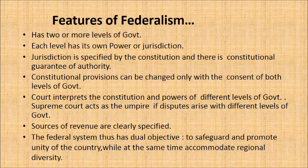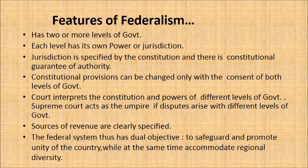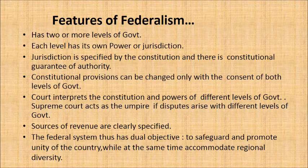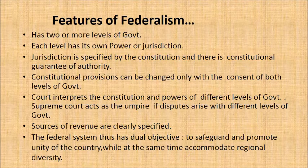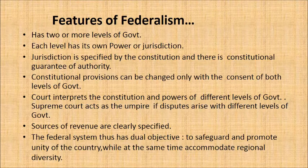The sources of revenue are clearly specified — meaning what kind of taxes go to the central government and what go to the state government are clearly specified in the constitutional provisions. The federal system thus has a dual objective: to safeguard and promote unity of the country while at the same time accommodating regional diversity. It has to see that the country stands united, and at the same time, that people belonging to different regions are accommodated well within the social setup.